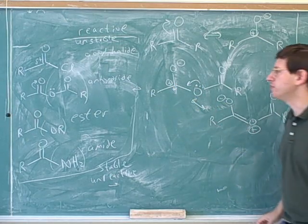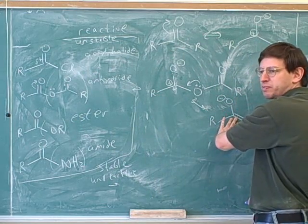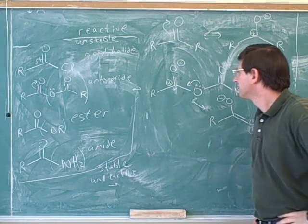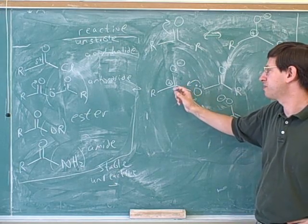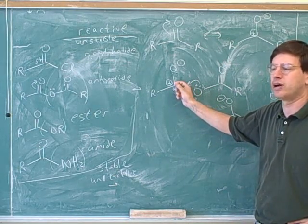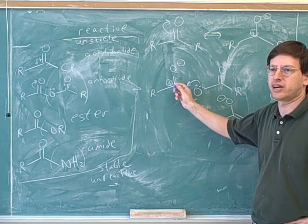And that means that this resonance form now has less weight in the overall picture. Remember, what's the real molecule like? The real molecule is a blend of this picture, this picture, and this picture. Well, the more other resonance structures there are, the less weight this picture is going to have. This is the picture that makes this electrophilic. So the more alternatives there are where there is not a positive charge on this carbon, the less positive charge it's going to have.